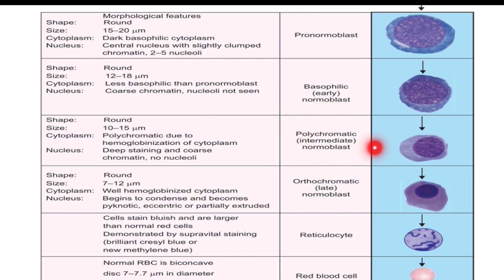Hemoglobin starts synthesizing in the early erythroblast step. Intermediate or polychromatic erythroblasts — the word 'polychroma' refers to multiple colors. Hemoglobin synthesis is increased, which makes the cell acidophilic, and the presence of RNA material makes the cytoplasm eosinophilic. The mixture of acidophilic hemoglobin and eosinophilic RNA in the cytoplasm makes it polychromatic. In this step, mitosis is sluggish and the nucleus is small, occupying about half of the cell area.